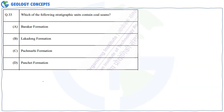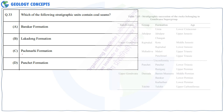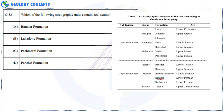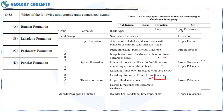Question 33: Which of the following stratigraphic units contain coal seams? From the Gondwana Supergroup we have Barakar, Panchet, and Pachmari formations. Only Barakar contains coal seams; Panchet and Pachmari do not. The Lakadong formation belongs to the Jayantia Group, and Lakadong Sandstone does contain coal seams. So the correct answers are Barakar formation and Lakadong formation — A and B are correct.